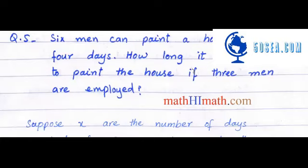It's me Seyyid Mohamad Hassan Adha from mathymath.com. Let's start with question number five of exercise number one point five. The statement of the question is: six men can paint a house in four days.